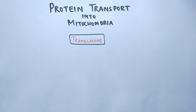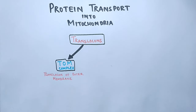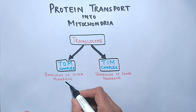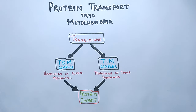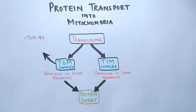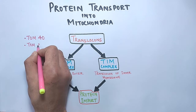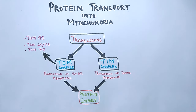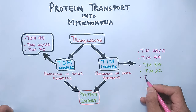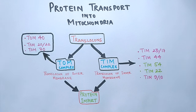For the outer membrane there is the TOM complex (translocon of outer membrane), and for the inner membrane there is the TIM complex (translocon of inner membrane). Both drive protein import. The most important outer membrane translocon is TOM40, with accessory translocons TOM20, TOM22, and TOM70. For the inner membrane, translocons include TIM23/17, TIM44, TIM54, TIM22, and TIM9/10.